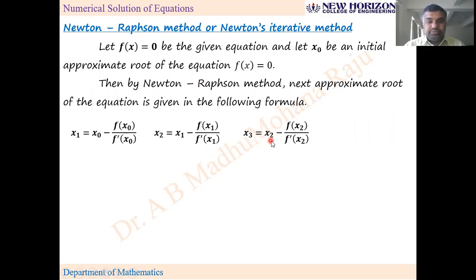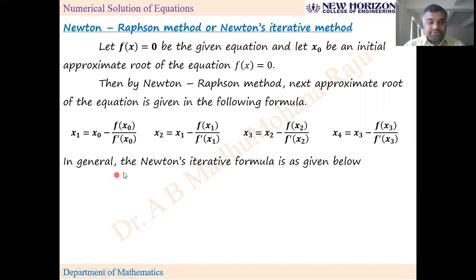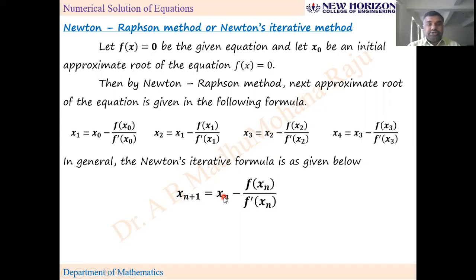x₃ = x₂ - f(x₂)/f'(x₂). This means the current root depends on the previous approximate root, that's why it is called Newton's iterative formula. In general, Newton's iterative formula is: xₙ₊₁ = xₙ - f(xₙ)/f'(xₙ).